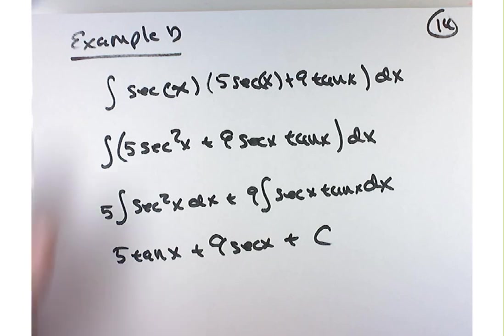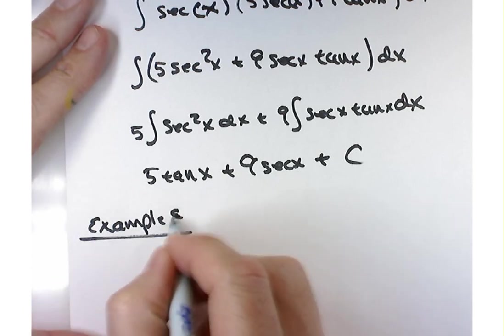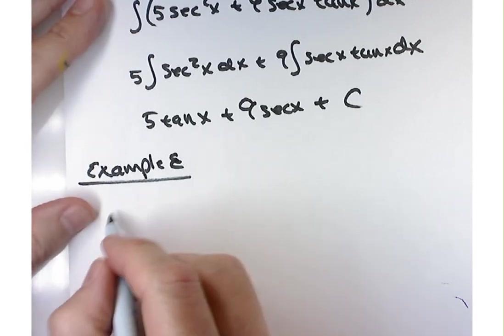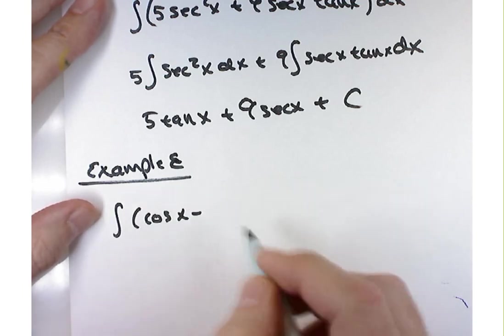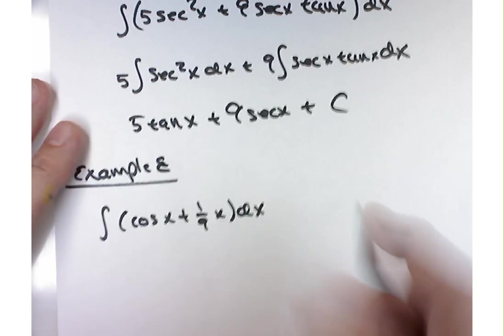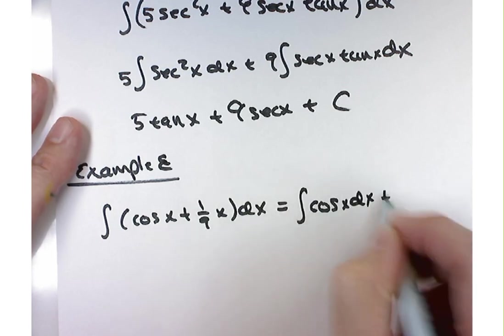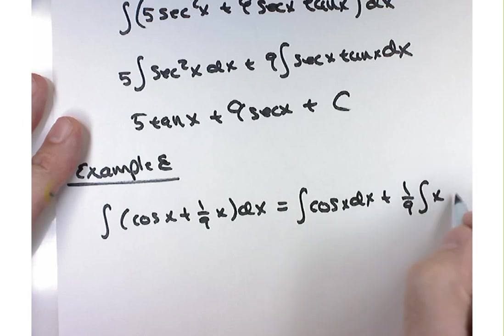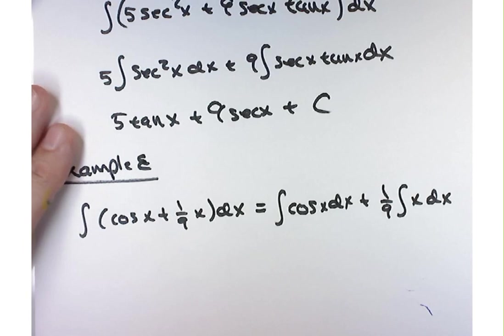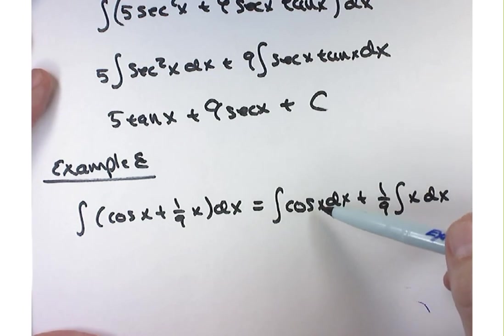Let's try example E. The integral of cosine of x plus 1 9th x dx. Now, you don't have to and, you know, maybe Drew's going to do this all in his head. That's great. You could, if you want to, split this up. I think after a while most of you are going to do this without splitting it up. But you could split it up like that.